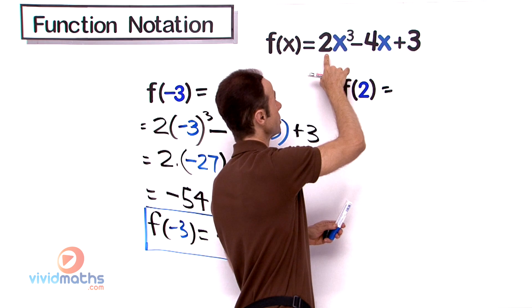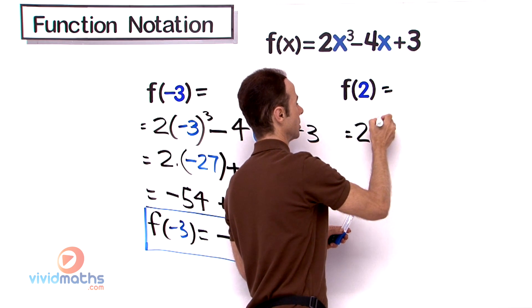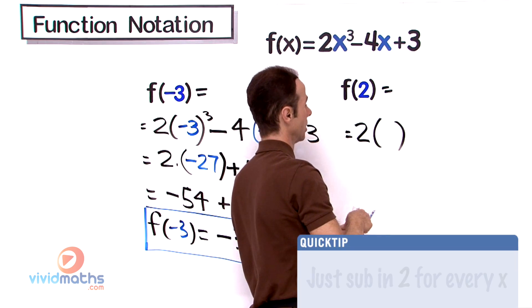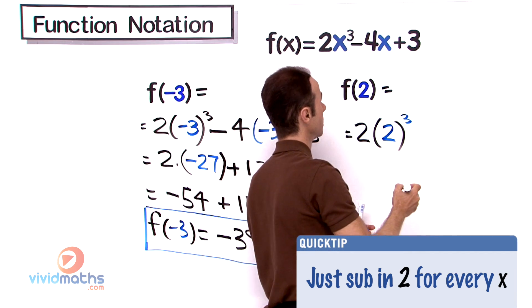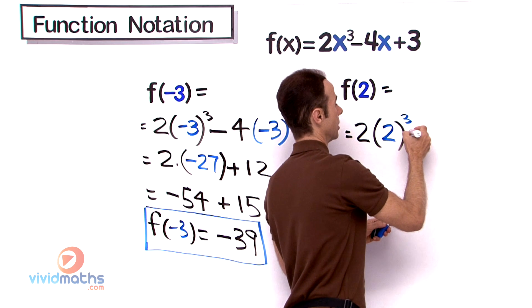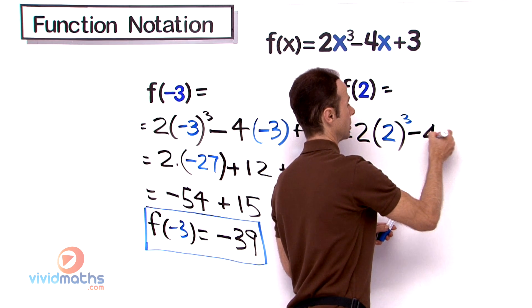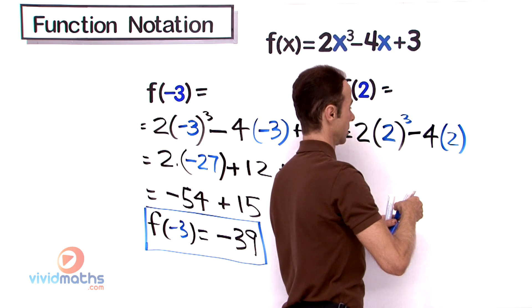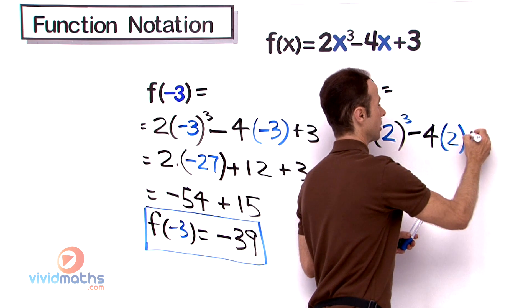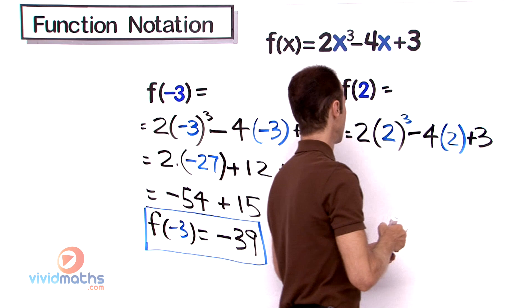So we are going to get this equaling 2(2)³ - 4(2) + 3. Let's process this.